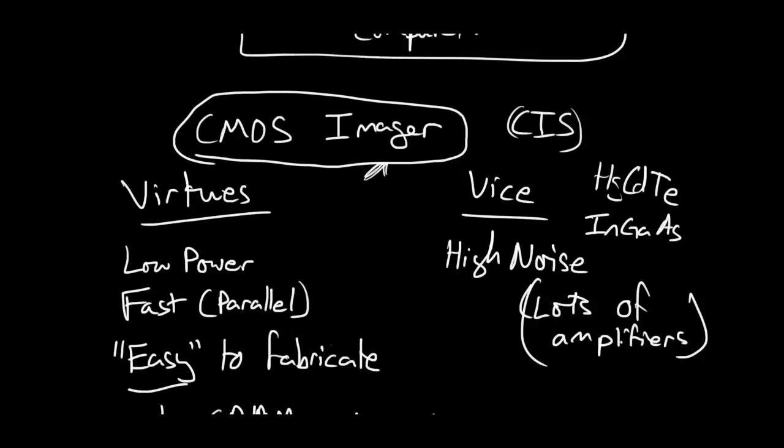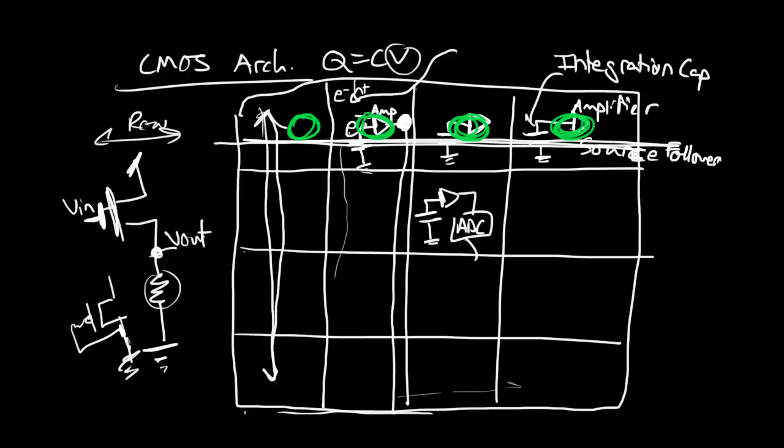So, if you scroll back up here and look at this architecture where every pixel has its own amplifier, and then you read that out on the column, this carries over one-to-one to infrared imagers.